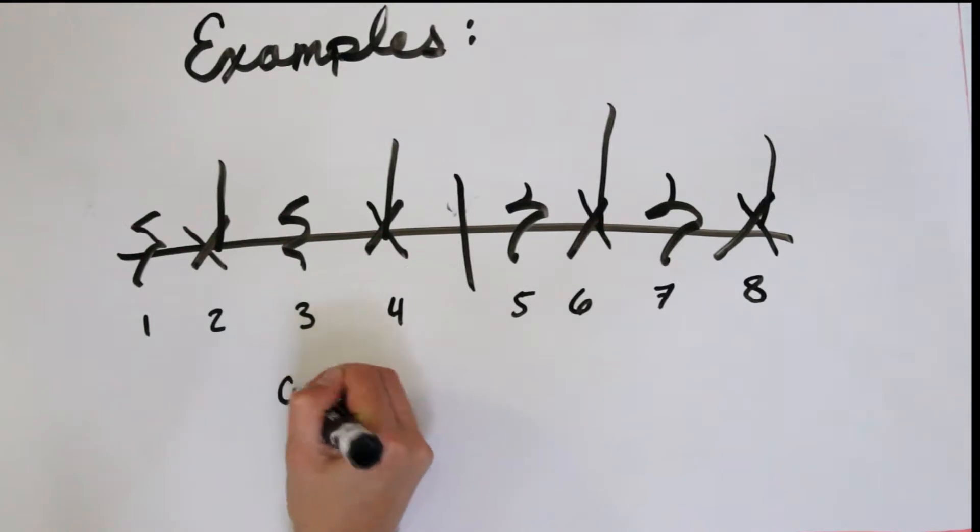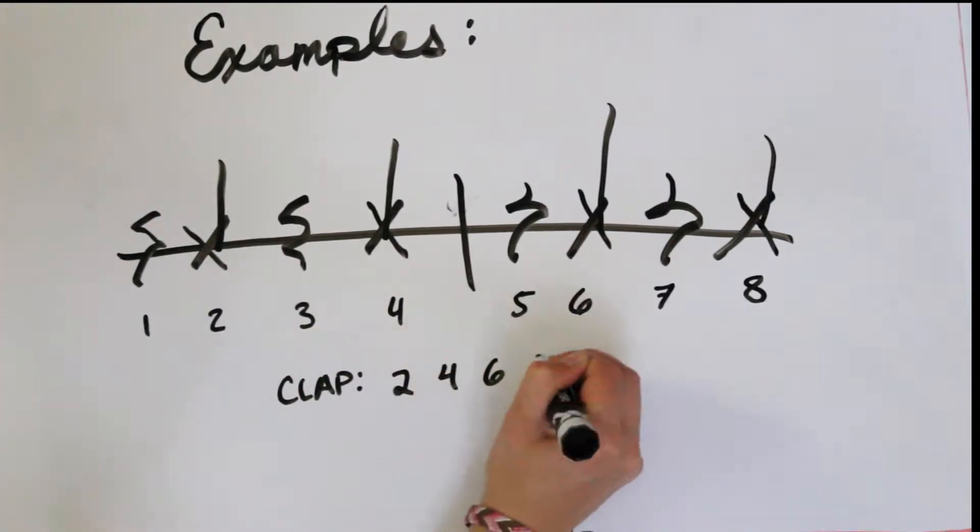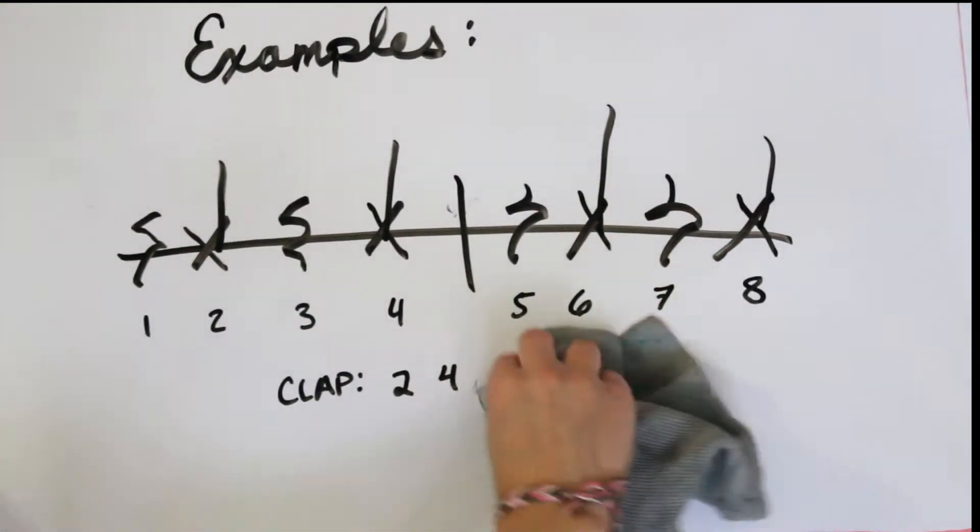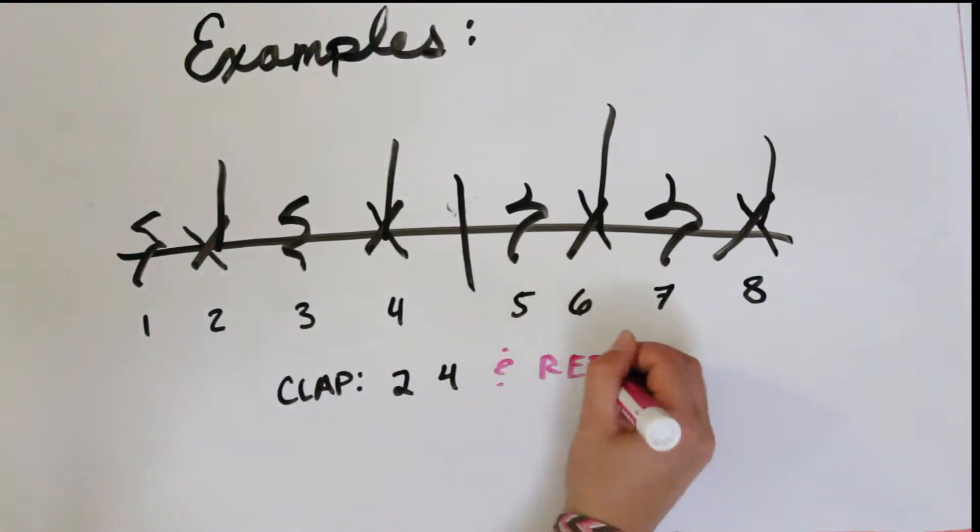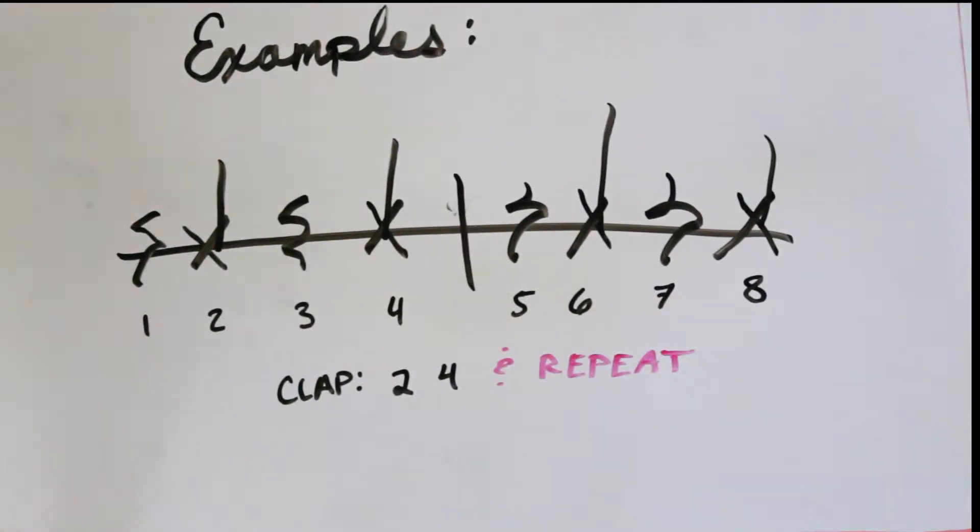But you say clap on 2 and 4 and then repeat, so you forget about 6, 8, 10, 12, and so on, and just call them all 2 and 4.